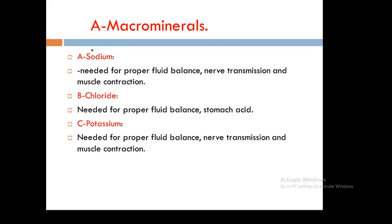Sodium is needed for proper fluid balance, nerve transmission, and muscle contraction. It is found in soy sauce, table salt, vegetables, bread, milk, and meat. Chlorine is needed for proper fluid balance and stomach acid, and is found in milk, meat, bread, and vegetables. Potassium is needed for proper fluid balance, nerve transmission, and muscle contraction, and is found in meat, milk, fresh fruits, vegetables, and whole grains.